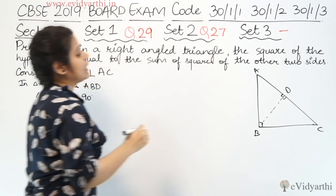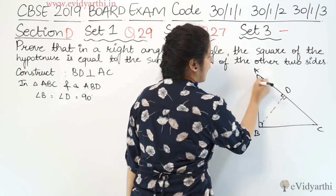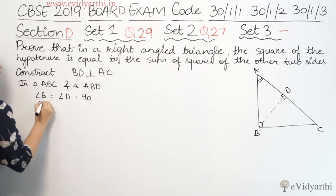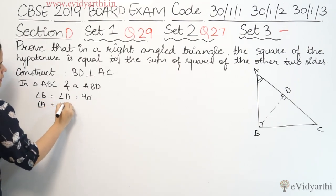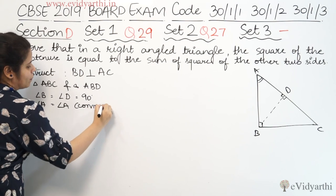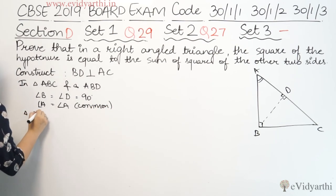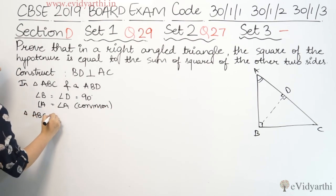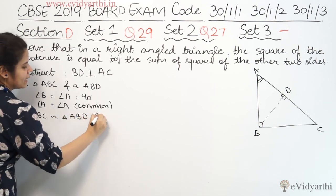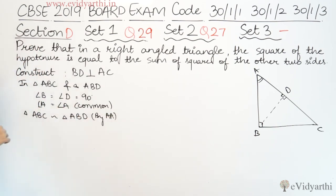इसके अलावा, अगर आप देखो, इस triangle और इस छोटे वाले triangle में angle A common है. So we can write angle A equals to angle A, जो कि common है. So हमारे पास दो चीजें आ गईं — I can write triangle ABC is similar to triangle ABD by AA similarity.